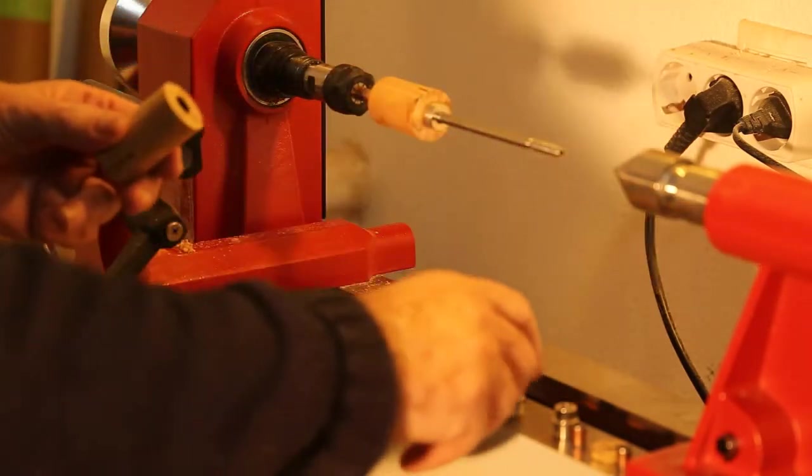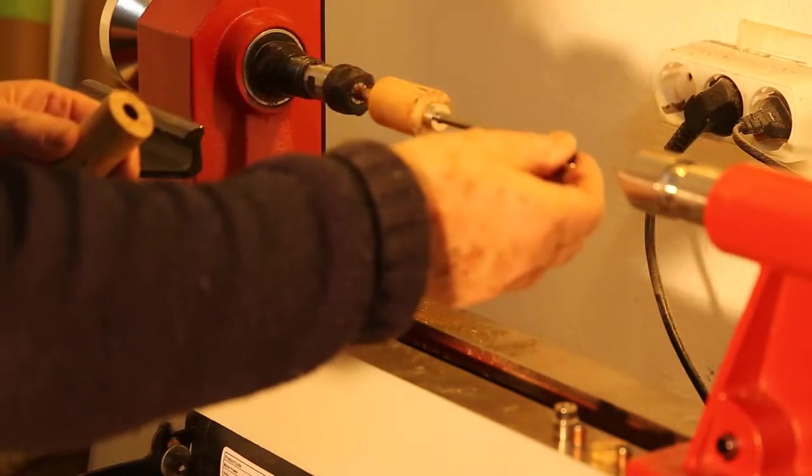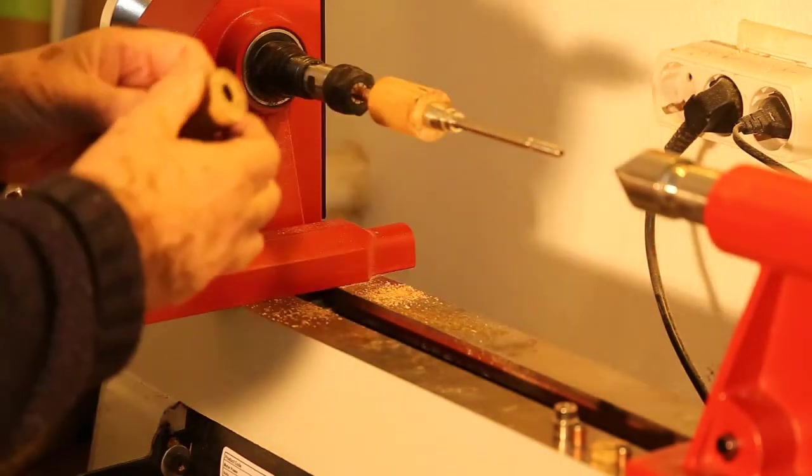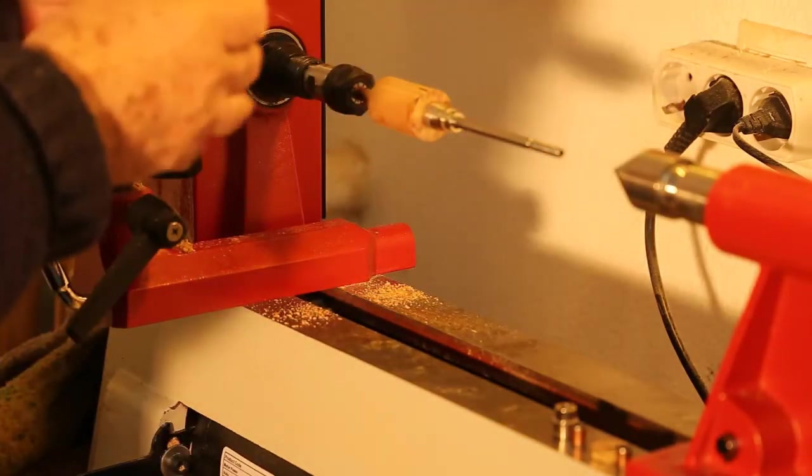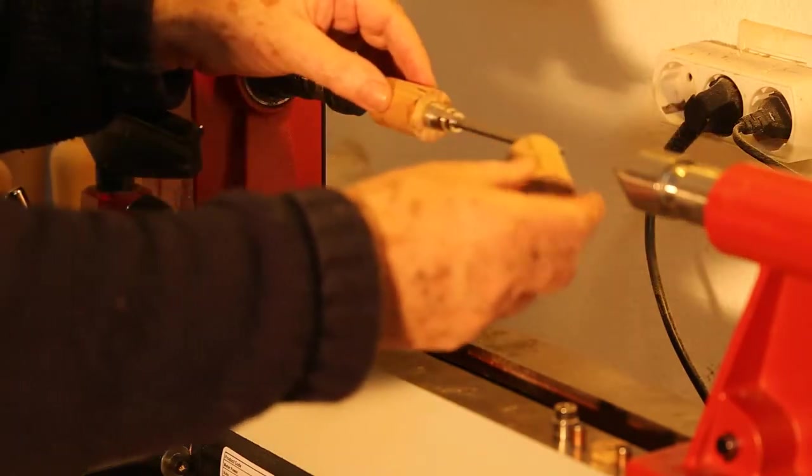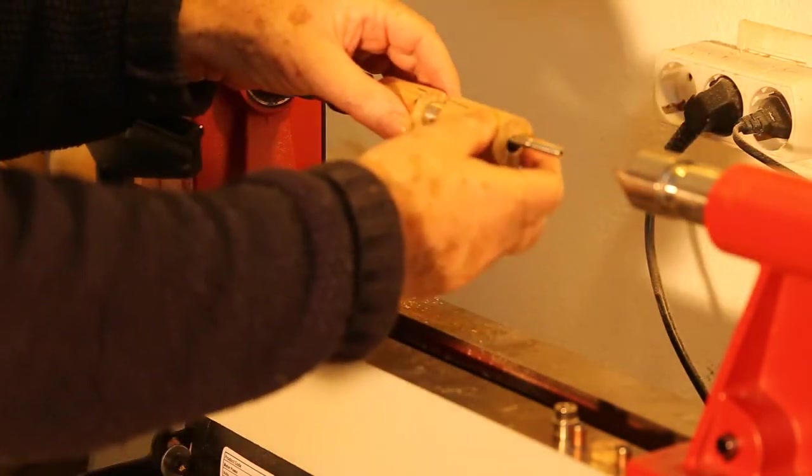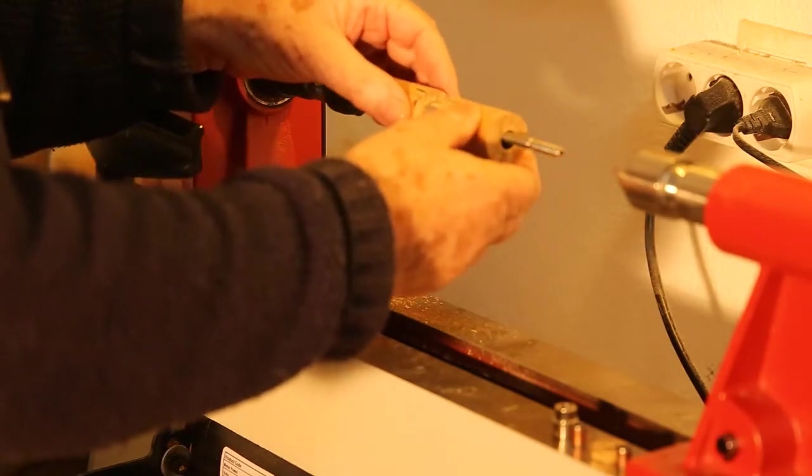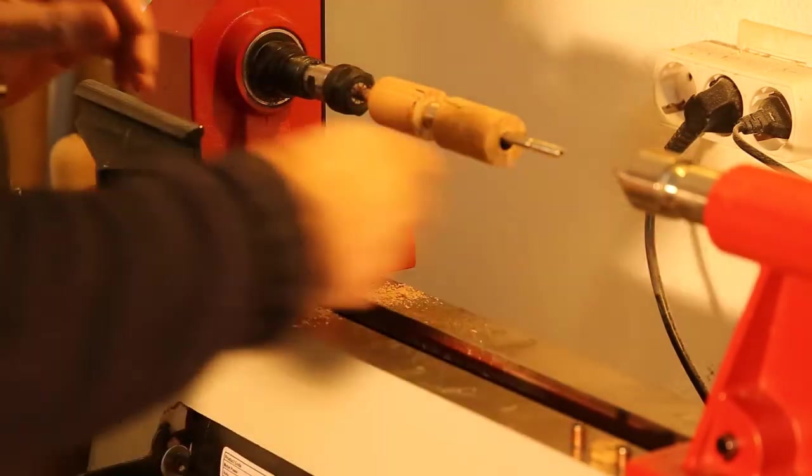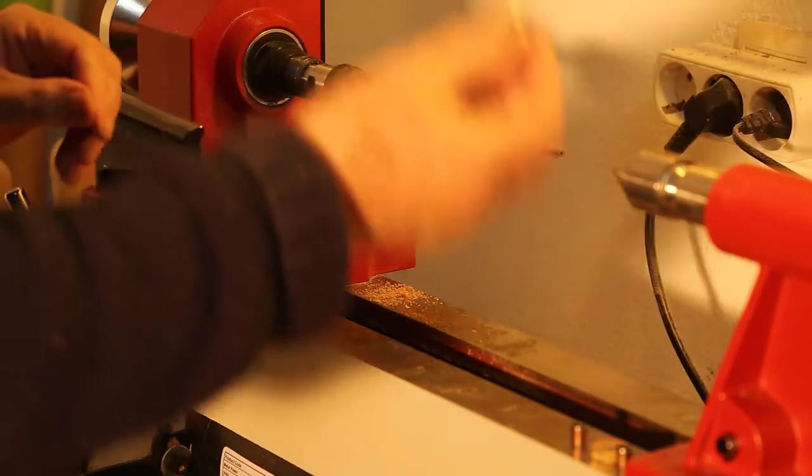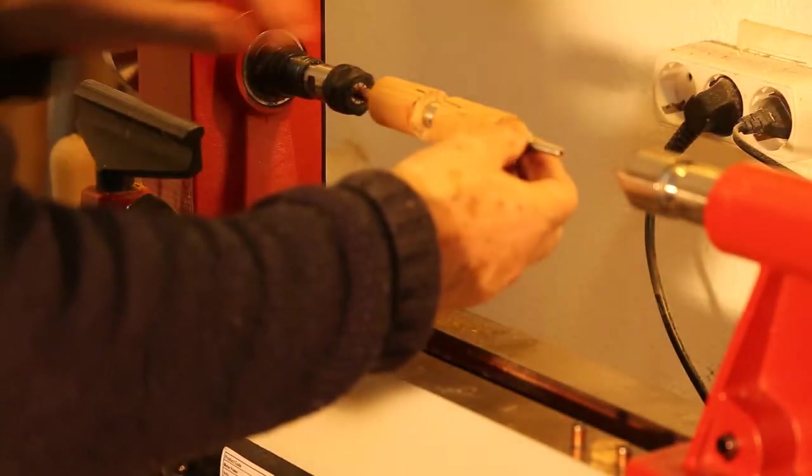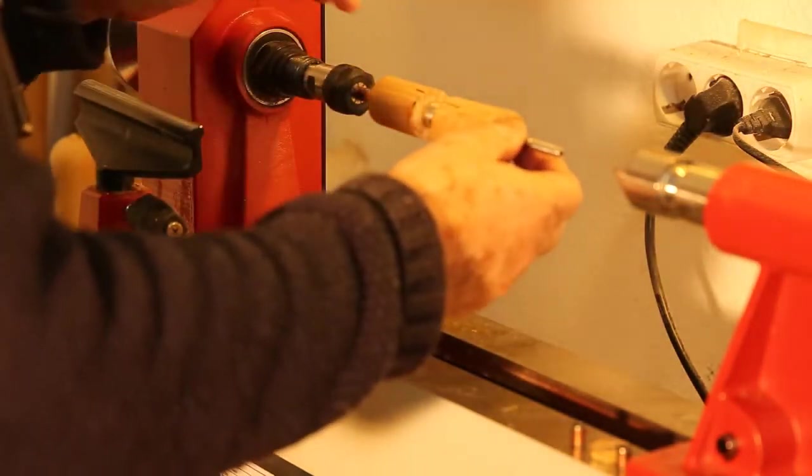What the bushes do is they make sure that the wood is centered. Then you put on a third bush, which is slightly smaller. And you line up the marks that you left on the wood to mark the grain. The last bush goes on, and it holds that piece central.